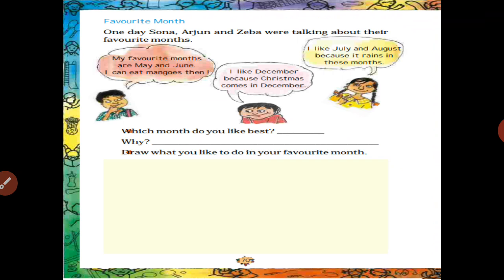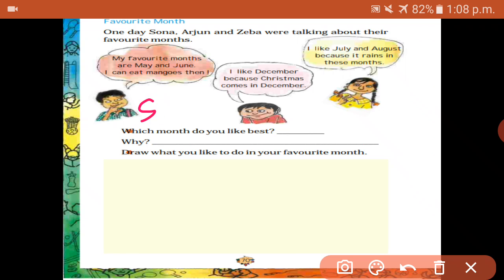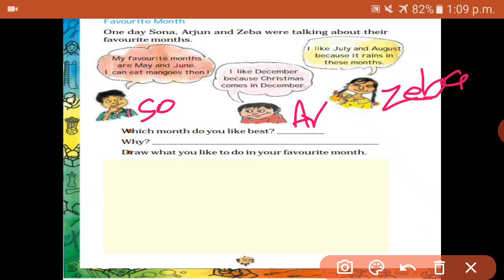Next: favorite month. One day Sona, Arjun and Zeba were talking about their favorite months. Sona says: my favorite month is May and June — I can eat mangoes then. Arjun says: I like December because Christmas comes in December. Zeba says: I like July and August because it rains in those months.